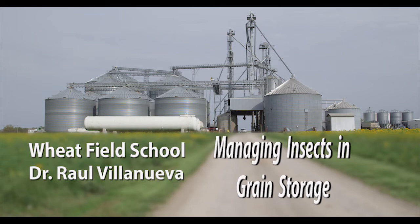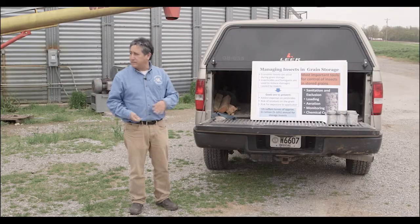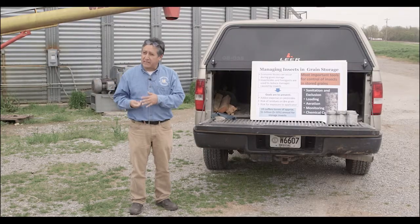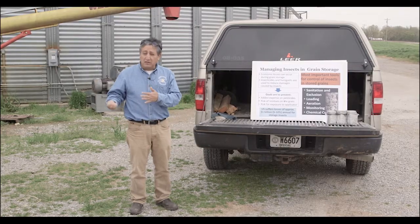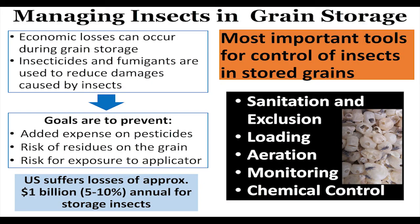Today we are going to talk about some issues that are important for trying to reduce damage on harvesting. This is something that Sam already talked about: sanitation and exclusion, loading, aeration, monitoring, and chemical control.